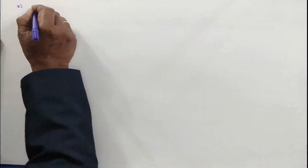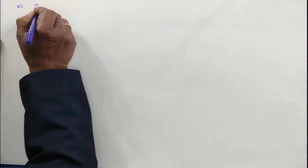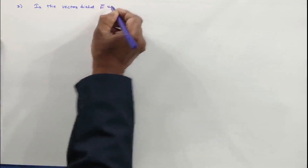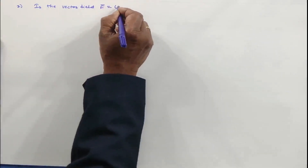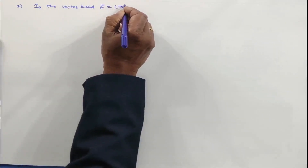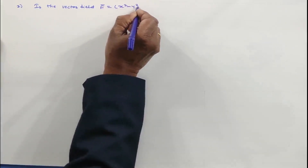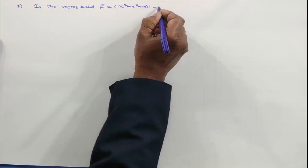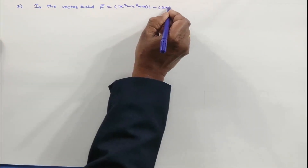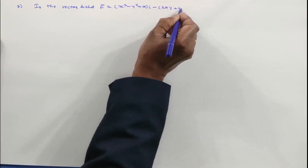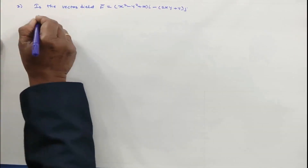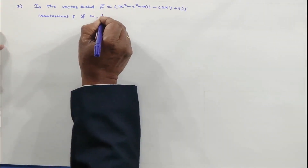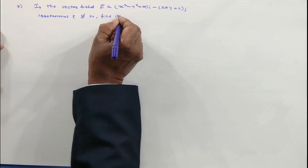The second problem involves the vector field F̄ = (x² - y² + x)i - (2xy + y)j. We need to determine if this field is irrotational, and if so, find its scalar potential.